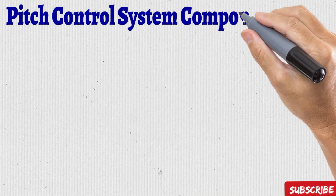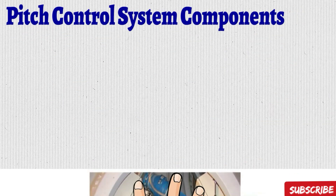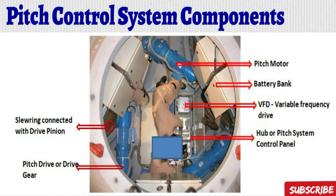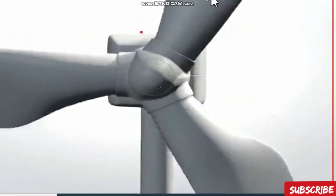These are the main pitch control system components. From the right side: first is the pitch motor, second is the battery bank, third is the variable frequency drive, and fourth is the main pitch system control panel. From the left side: first is the slewing ring connected with the drive pinion, and second is the pitch drive — the gear drive.